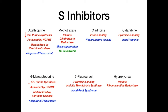The S phase inhibitors are really high-yield because there are so many of them. Now let's wrap up with the G2 phase. The agents you need to know are etoposide, teniposide, irinotecan, and topotecan. For exam purposes these are essentially two drugs: teniposide and etoposide are basically the same, and topotecan and irinotecan should be considered one drug.